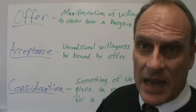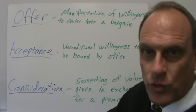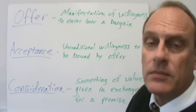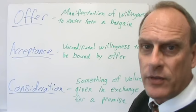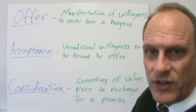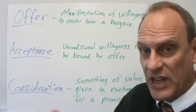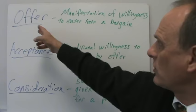Our second element is offer. Offer, acceptance, and consideration are generally viewed as the classical elements of a contract. But in this presentation we're adding some other elements as well. The Restatement on Contracts says that an offer is a manifestation of willingness to enter into a bargain, made so as to justify the other person that their assent is invited, and that if they assent to the offer, that concludes the bargain — they've got a deal. So an offer is: I want to do a deal with you, and you manifest that in some way.